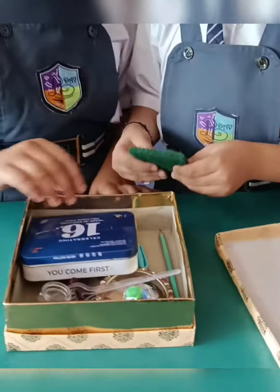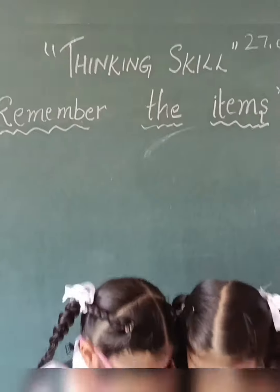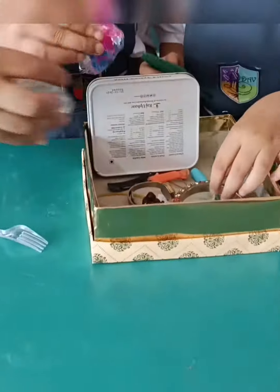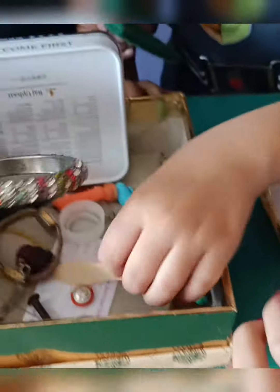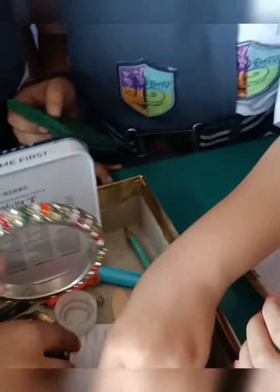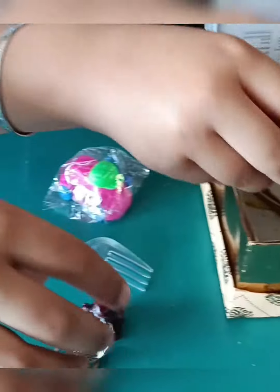See what is there in the treasure box. See very carefully. Check all the items. Krishna, you also check the items. Remember the name of all the items you see. You have to write the names of all the things.